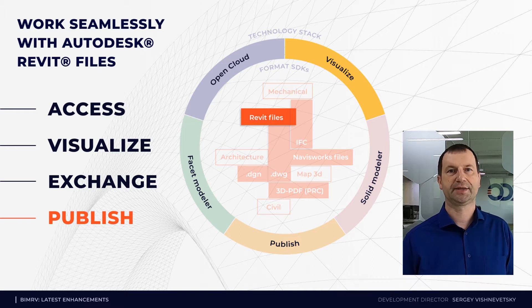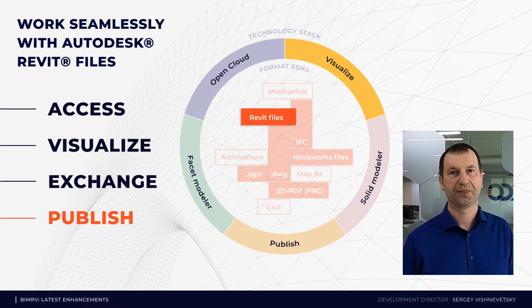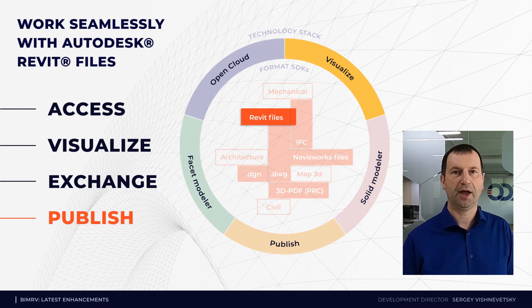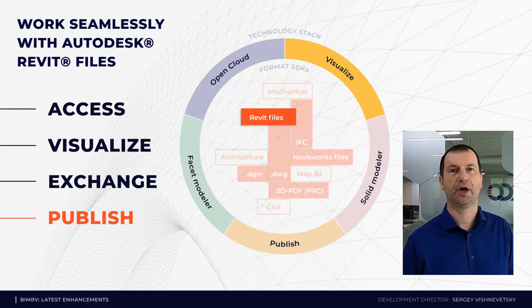This year we added support for the latest 2021 format, and files starting from the 2015 version are automatically converted to the latest version during file opening. Using the Toolkit API, you get access to all data stored in the Revit file. Ivan Serbinovsky, team lead of the BIM RV team, will give you details in a few minutes. Along with property access, BIM RV SDK provides geometry data processing for high quality visualization and PDF export.